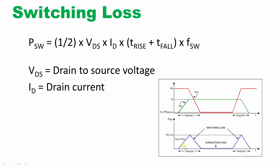The power triangle — that triangular area — represents the loss during turn-on time as well as turn-off time. The triangular area is ½ × base × height. Here the base is T_rise (rise time) or T_fall (fall time), and the height is VDS × ID — the drain-to-source voltage multiplied by the drain current.